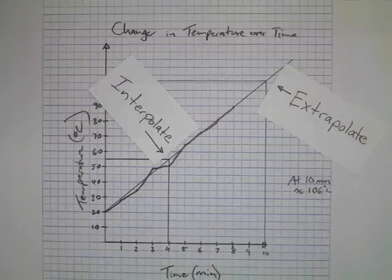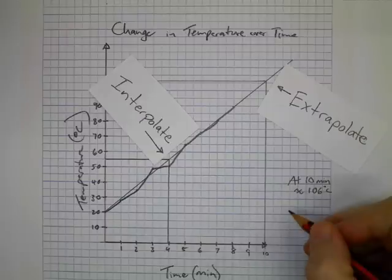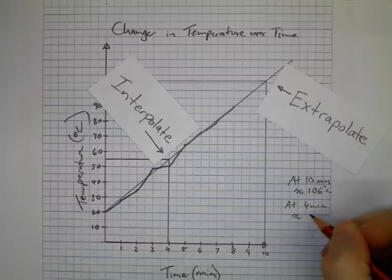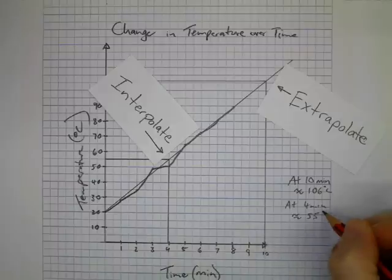We can also use it to find data in the middle of our graph where things were a bit wobbly. This is called interpolation, and for example at 4 minutes you can see that it was about 55 degrees Celsius.